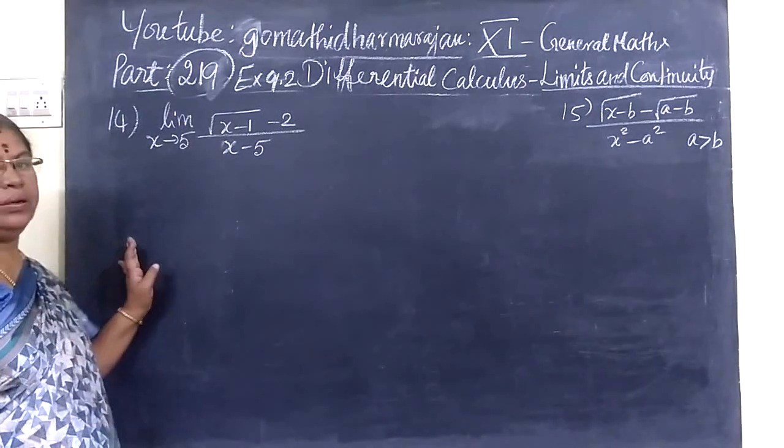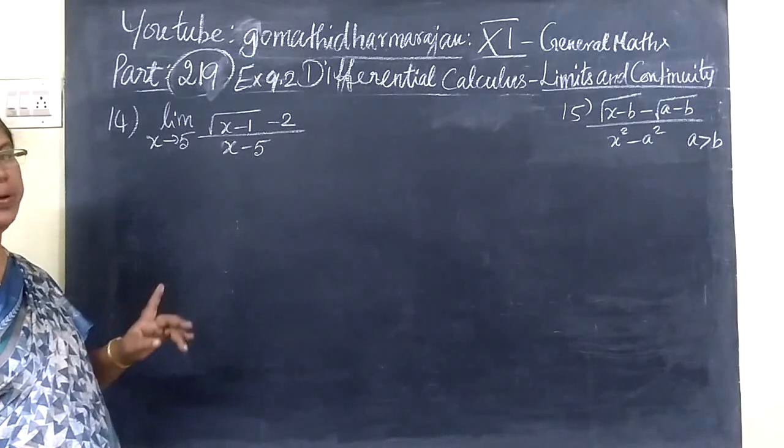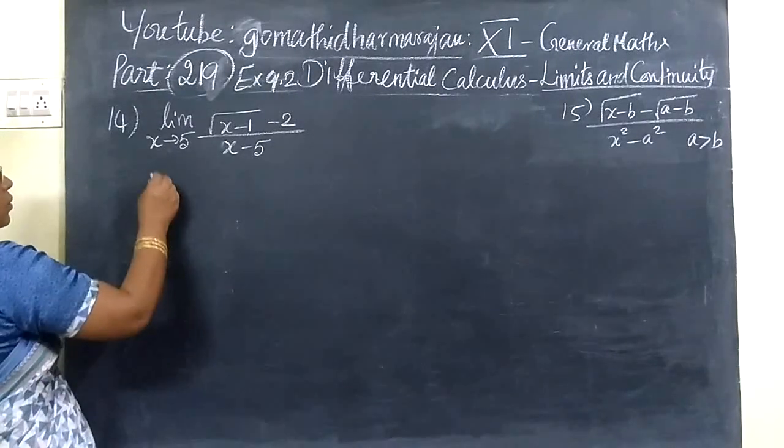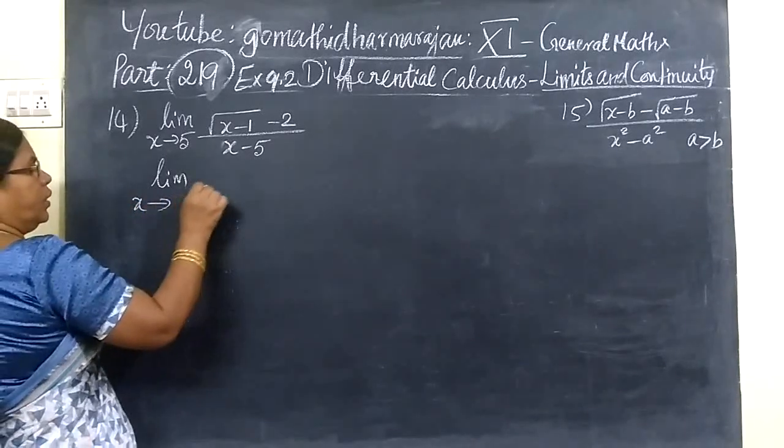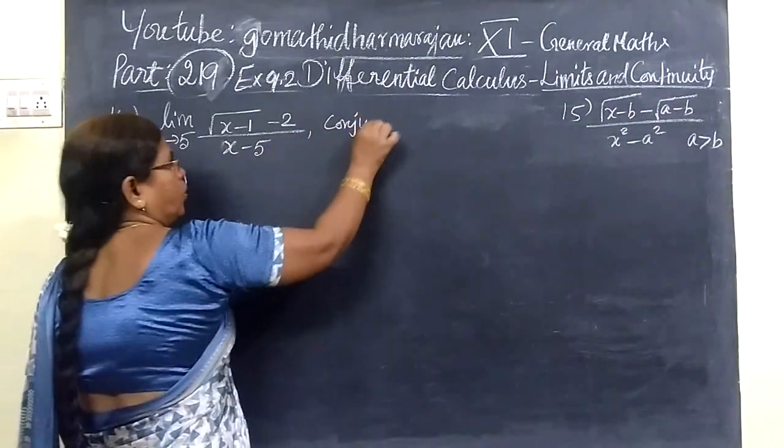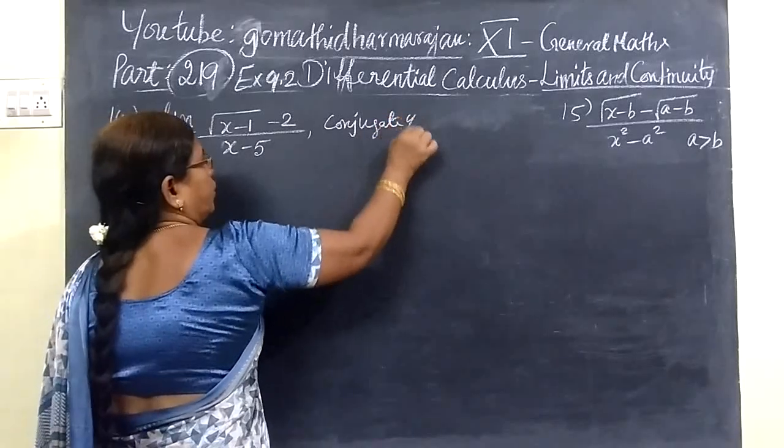So, coming to the next question, 14 to 15 we are seeing. Write this next step, extends to 5, you take the conjugate, every time you are taking the conjugate of numerator.